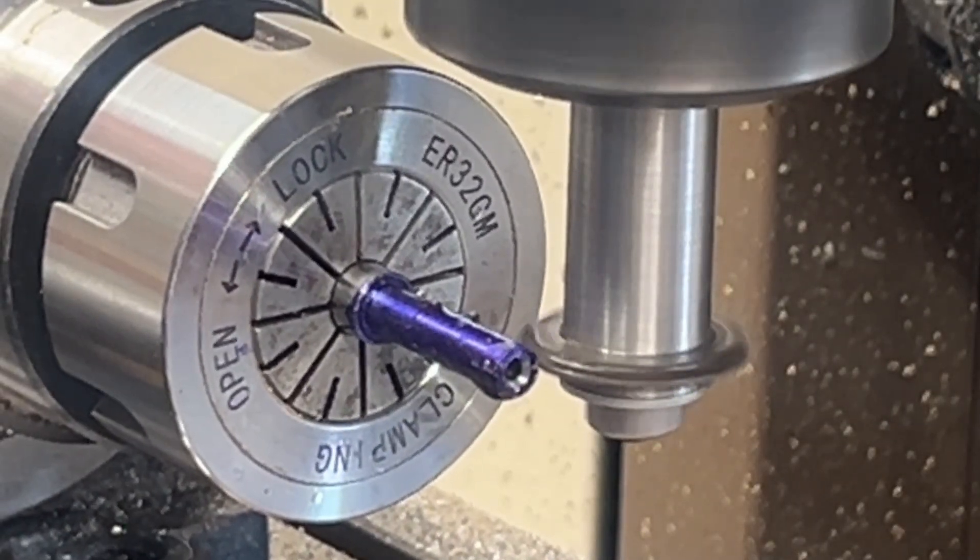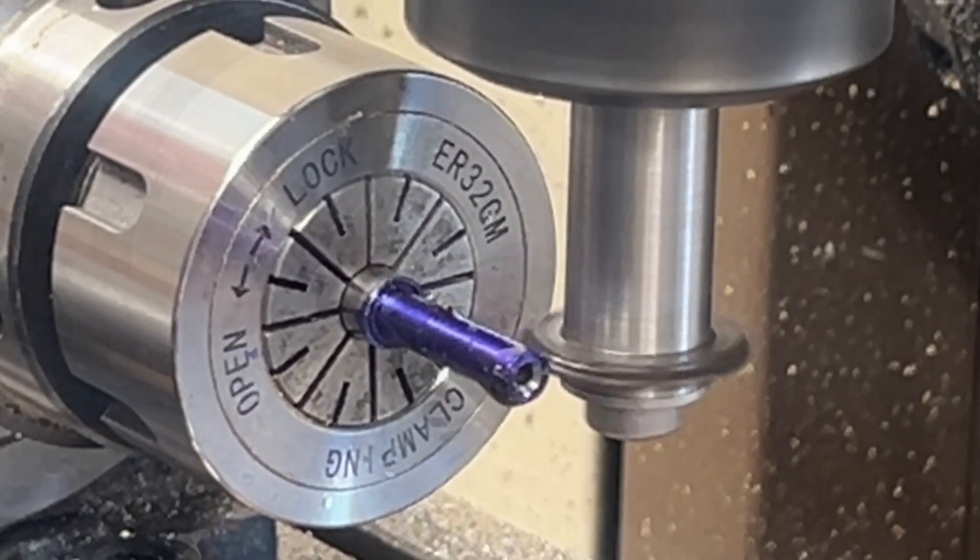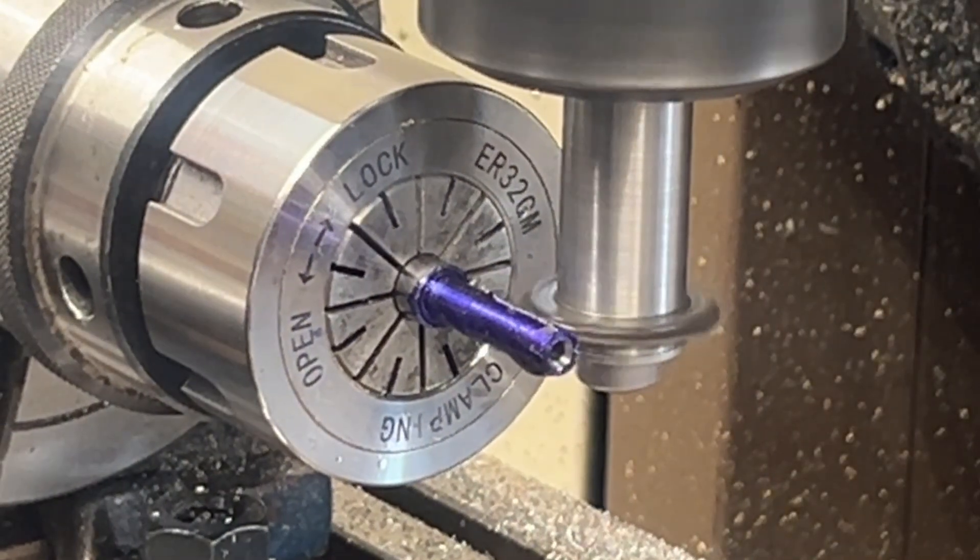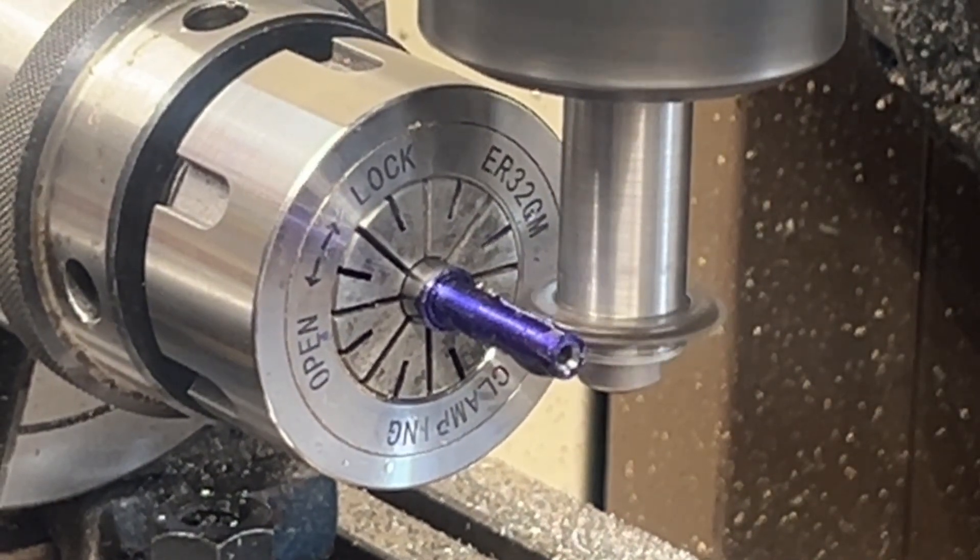The cutter speed was also massively reduced compared to cutting brass wheels, about 400 to 450 rpm.